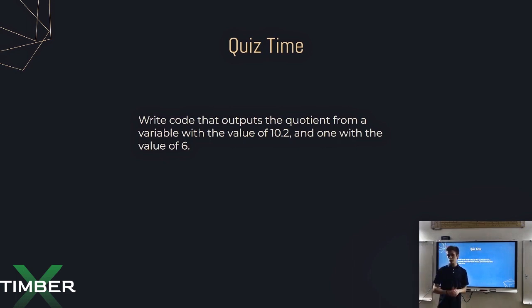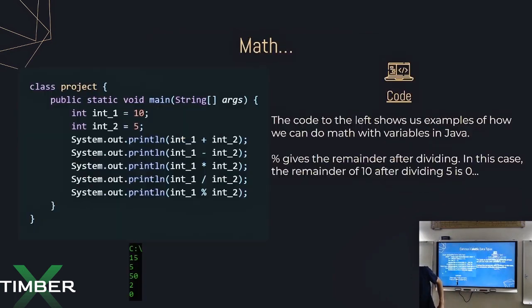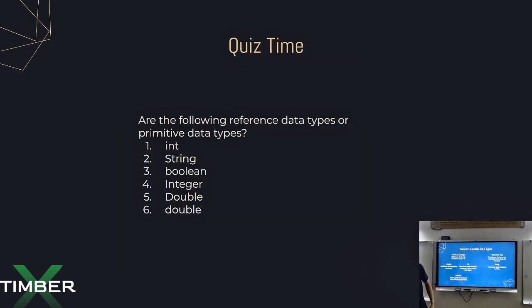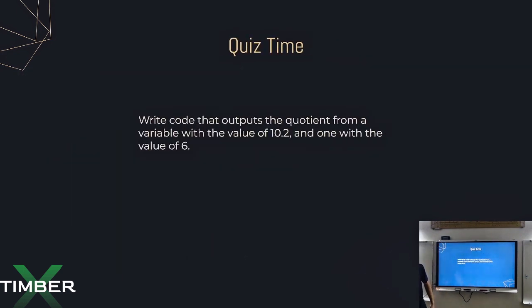Write code that outputs the quotient from a variable with the value of 10.2 and a variable with the value of six. We talked about this in the last video, where we can make variables and then perform mathematical functions on top of those and return the output. Go ahead and do this as a quiz, and once you're done we can move on.